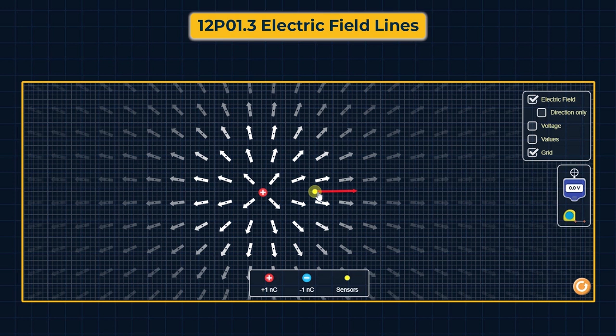Because of the positive charge, the electric field direction is radially outward — that is, directed away from the charge. We can verify this using the sensor and also check the electric field value at any given point.